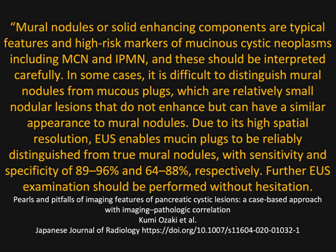Mural nodules or solid enhancing components are typical features and high-risk markers in mucinous tumors. Whenever we see in an IPMN or MCN a solid component in the wall or thick septations with enhancement, you have to worry it's malignant and that lesion is going to be coming out. There's a distinction between mural nodules and mucus plugs, which is something you see more on EUS, but when we see any mural nodules, the patient is going to have this resected. If you think a lesion looks malignant, it probably doesn't matter what EUS shows — you're simply going to resect it. If you really know what the lesion is and know it's going to be resected, EUS may be simply superfluous.